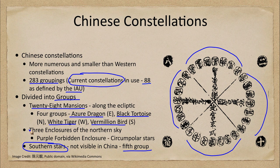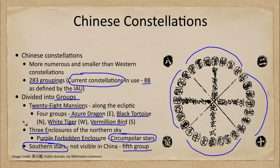There were also different enclosures. In the northern sky there were three enclosures; the northernmost would be the purple forbidden enclosure, which included those very important circumpolar stars. These were associated with the emperor and the people close to him — other members of the royal family and high advisors — making them very important stars in Chinese culture.